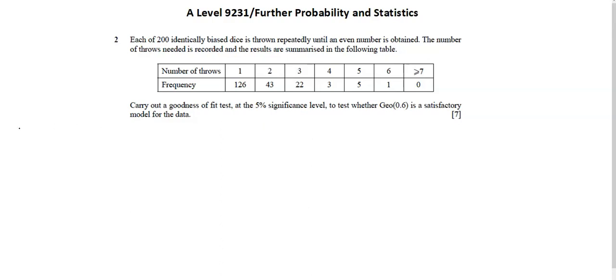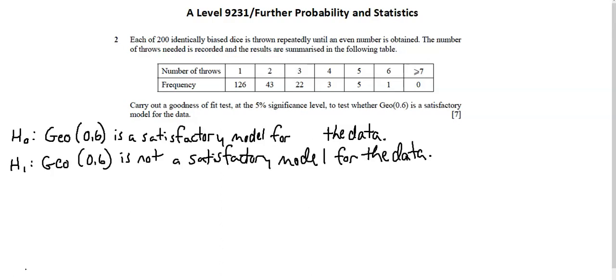I'm going to begin by identifying my null hypothesis and my alternative hypothesis. The distribution is a satisfactory model for the data or the distribution is not a satisfactory model for the data. And to give us a bit more board room, I'm going to shrink those down.